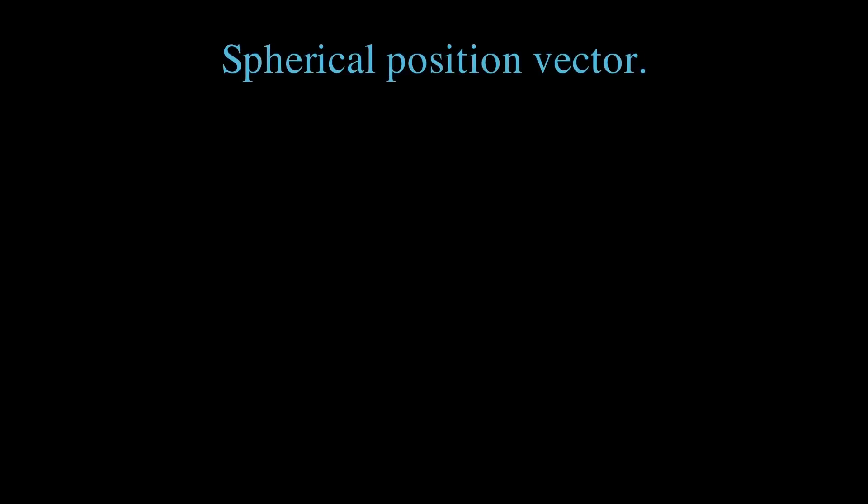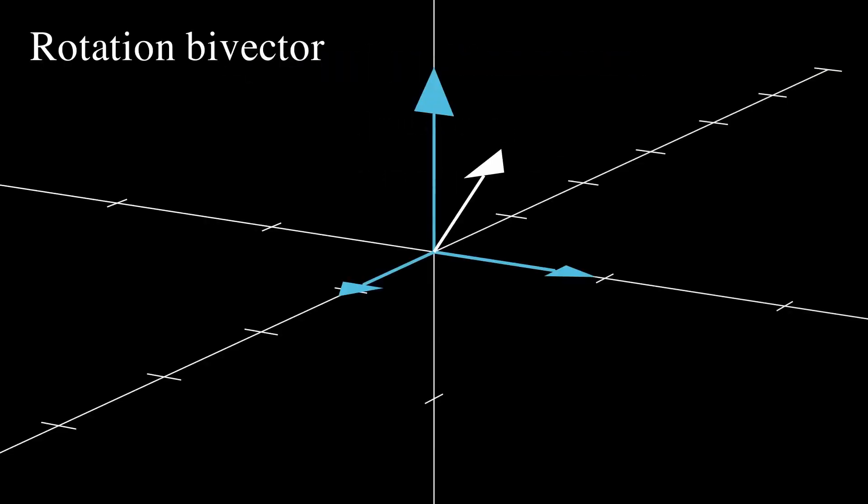To express our spherical position vector, we'll let i equals e1 e2, and we'll write x is r hat times r, where r hat is e3 times e to the j theta. j is the bivector that rotates from e3 to r hat. We need to figure out the value for j.